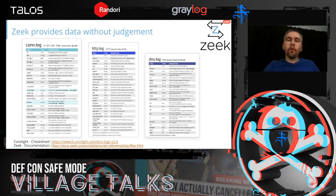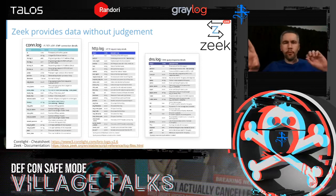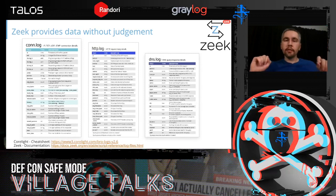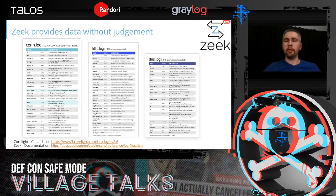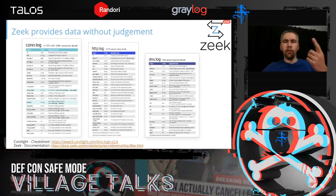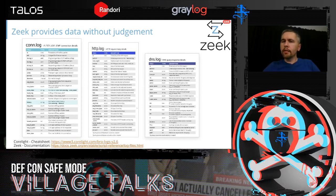Then there are protocol-specific logs. For HTTP data — a web browser talking to a web server — you see all the metadata: the user agent string, the URI requested from the client side, the MIME type returned, bytes transferred, status code — all of that in the HTTP log. Similarly for DNS, you can see the client and server, and also the queries and answers, the responses — which is surprisingly difficult to dig into sometimes.